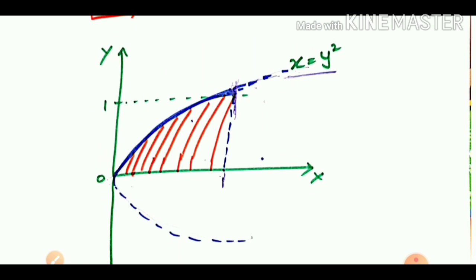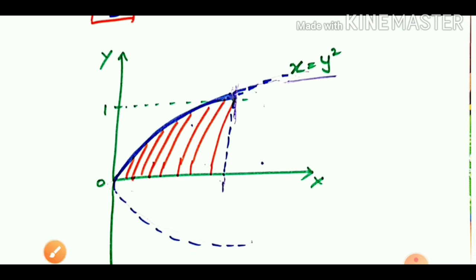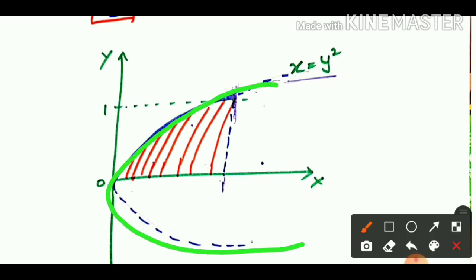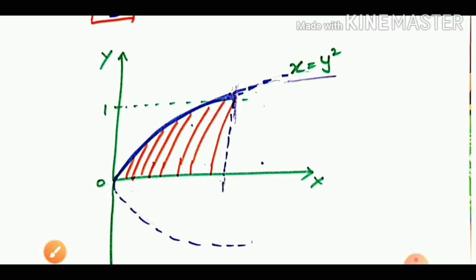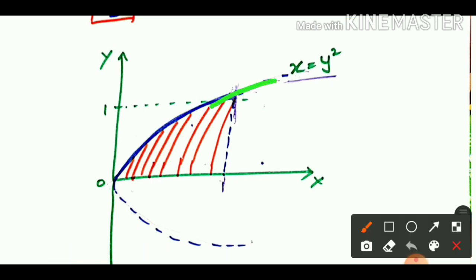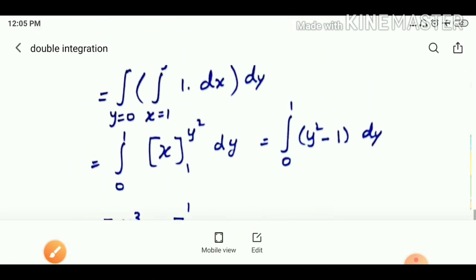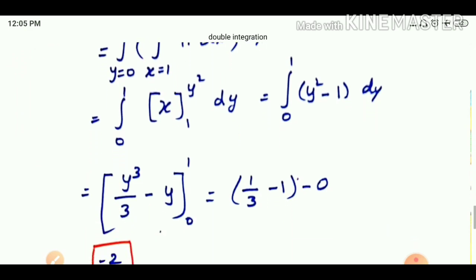Now, looking at the graph: x is equal to y squared, so here is the curve of the function. The curve represents x = y². We have the y limit going up to 1, and x also goes to 1. The x limit is 1 to y squared. We draw the curve and identify the region.